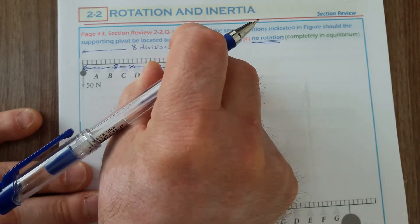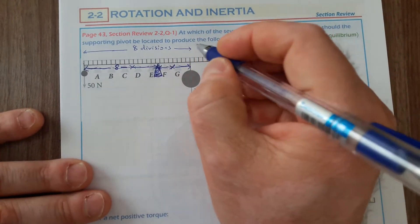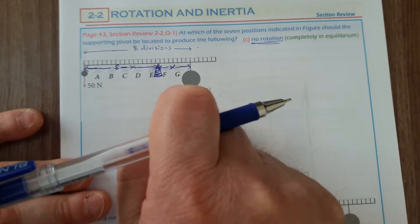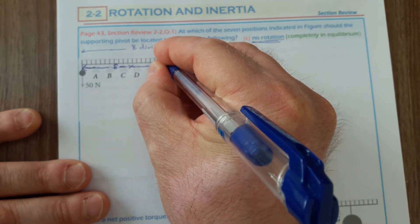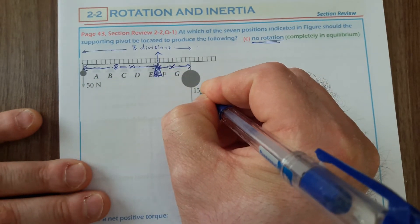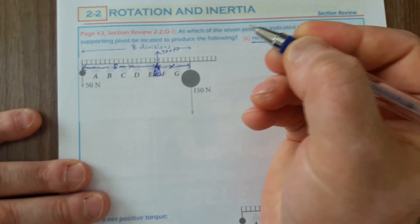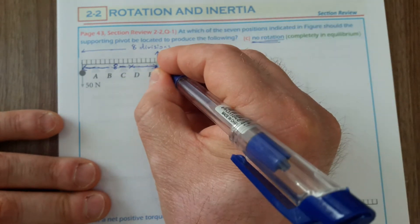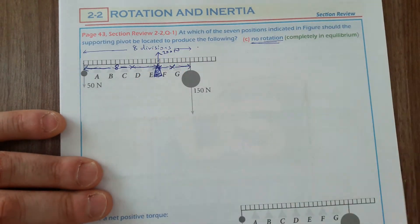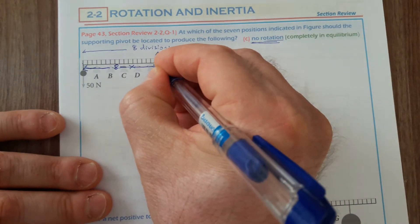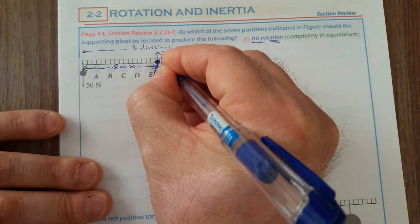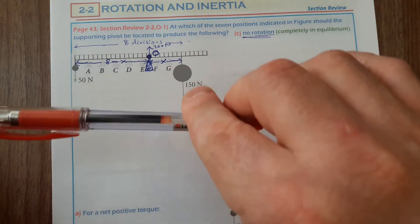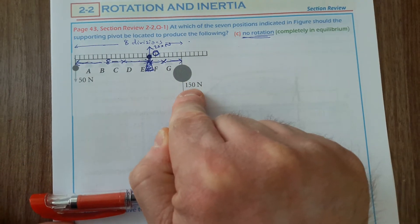If this side is x, the other side must be 8 minus x. The 50 N and 150 N forces act downward, summing to 200 N, so the pivot must apply an upward force of 200 N. To apply rotational equilibrium, we locate the axis of rotation at the pivot location O, then define the direction of rotation for each force — 150 N produces clockwise (negative) rotation and 50 N produces counterclockwise (positive) rotation.